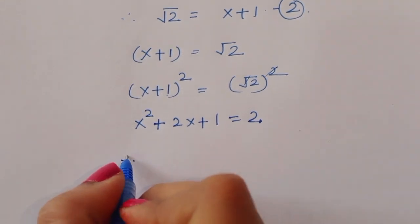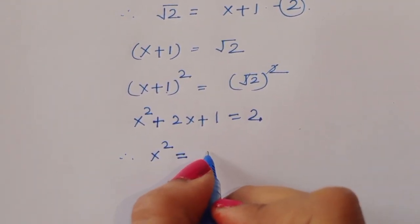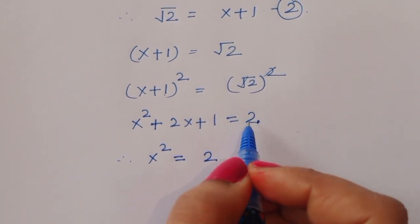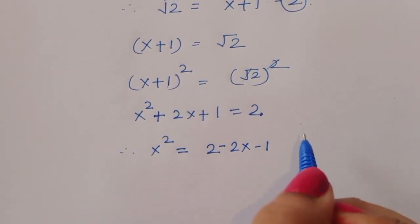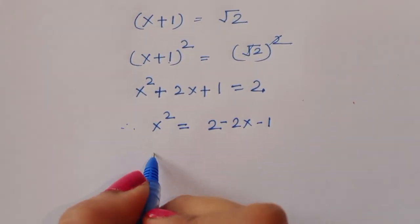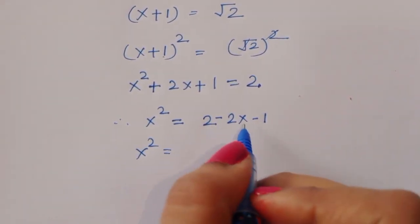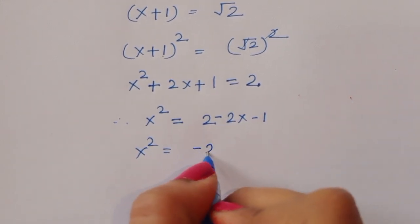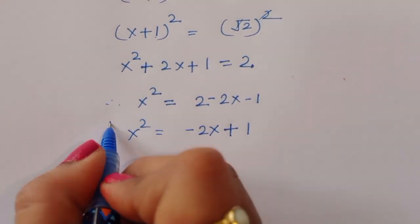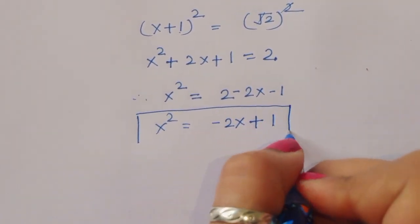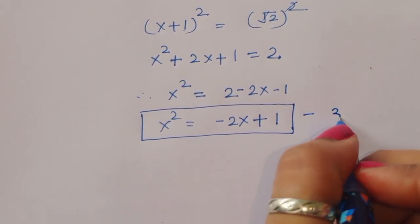Therefore, x² = 2 - 2x - 1, which gives x² = 1 - 2x. This is the value of x², equation number 3.